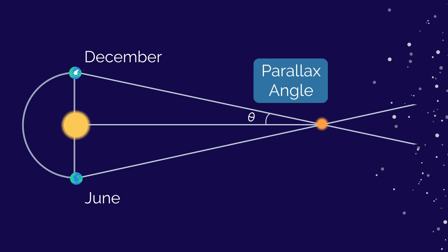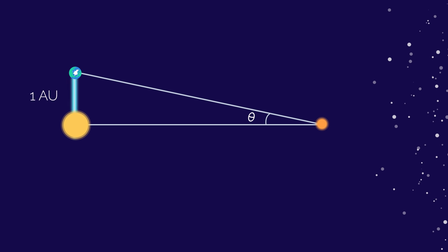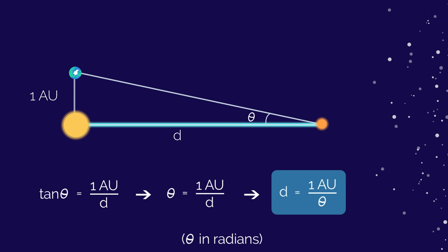Since we already know the distance from the Earth to the Sun, we can now use this parallax angle and some trigonometry to work out exactly how far away the star is.